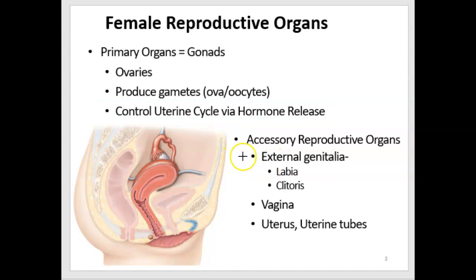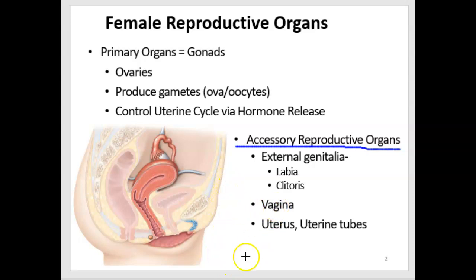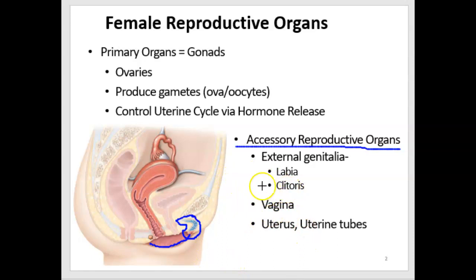The ovaries are the primary organs. In addition, there are accessory organs, or secondary organs. These accessory organs include structures we can see outside of the body on the body wall. That includes the external genitalia, the labia, which are around the urethral and vaginal openings. Then there's a section a little bit anterior to that with erectile tissue along the body wall, called the clitoris.